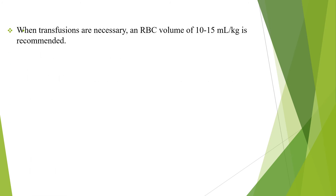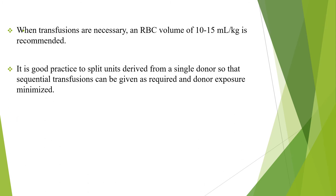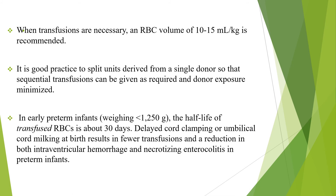When transfusions are necessary, an RBC volume of 10 to 15 ml per kg is recommended, and it is good practice to split units derived from a single donor so that sequential transfusions can be given as required and donor exposure minimized. In early preterm infants, especially those who weigh less than 1.25 kg, the half-life of transfused RBCs is about 30 days. Delayed cord clamping or umbilical cord milking at birth results in fewer transfusions and a reduction in both intraventricular hemorrhage and necrotizing enterocolitis in preterm infants.